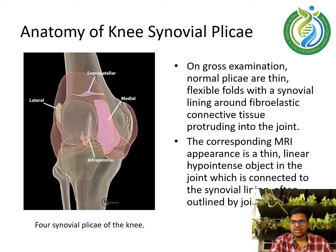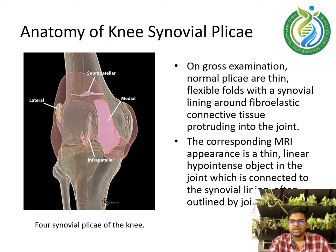Regarding the anatomy of knee synovial plicae: on gross examination, normal plicae are thin, flexible folds with a synovial lining around fibroelastic connective tissue protruding into the joint. The corresponding MRI appearance is a thin, linear, hypointense structure in the joint which is connected to the synovial lining and outlined by joint fluid.